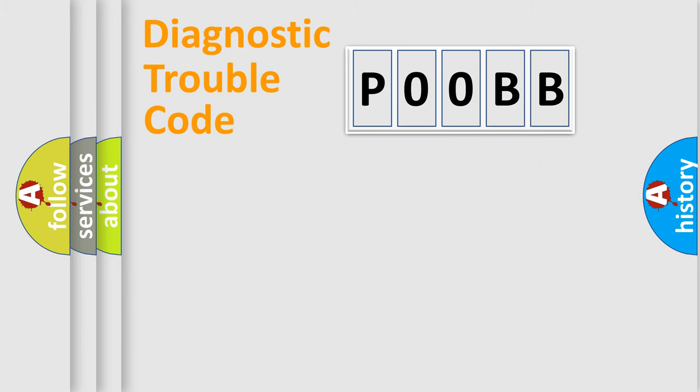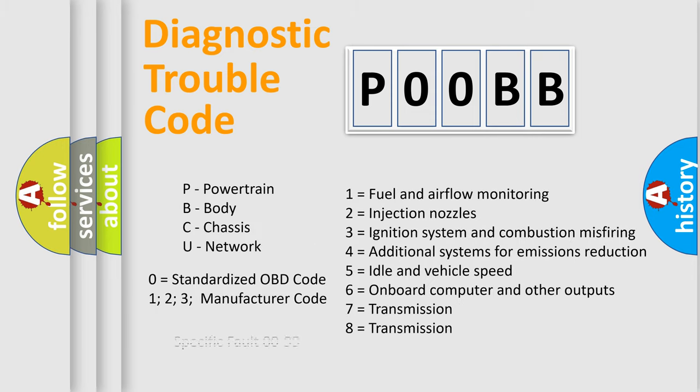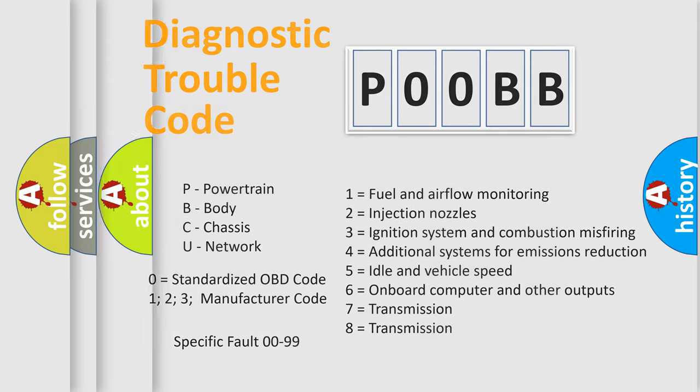Let's not forget that such a division is valid only if the second character of the code is expressed by the number zero.